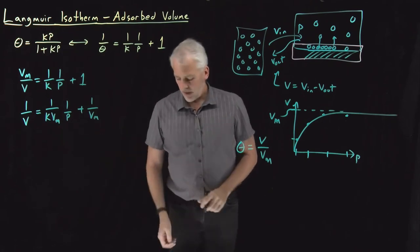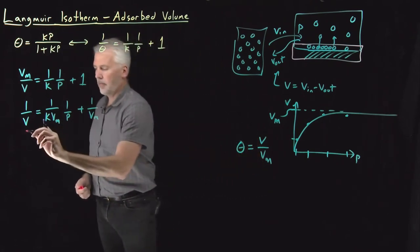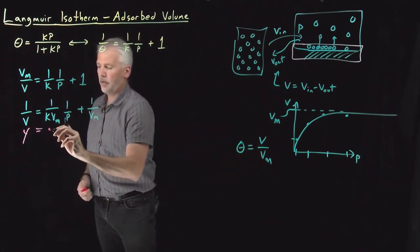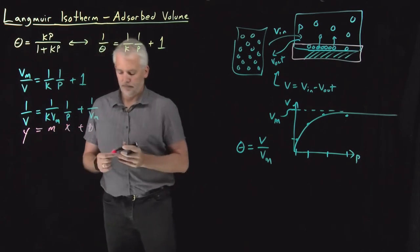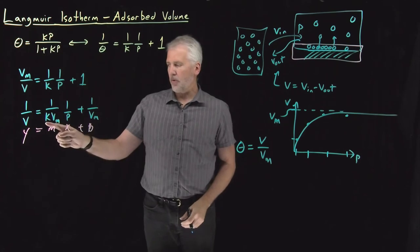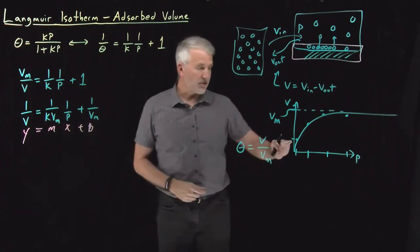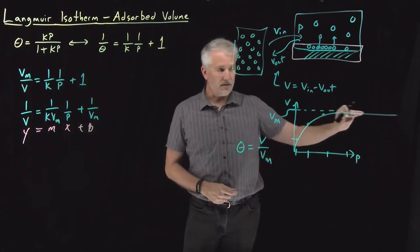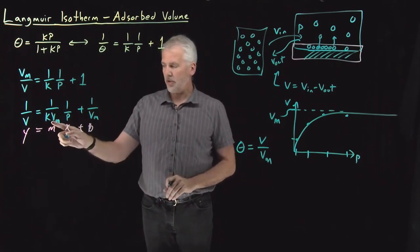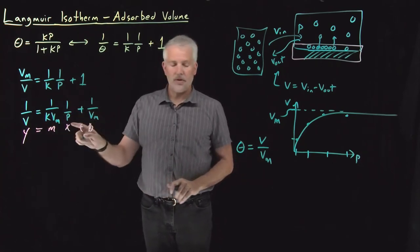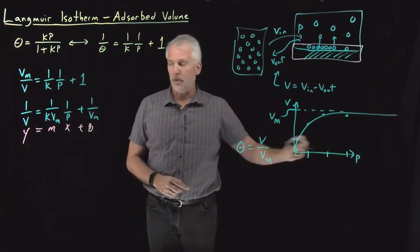So that's also a linear equation in the form y equals m times x plus b. The m term with K's and Vm's, Vm is just a constant, whether we've measured it yet or not, it's just some particular number for a given system. Those K's and Vm's are constant, pressure is the independent variable that we vary.